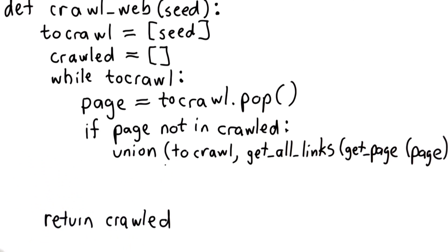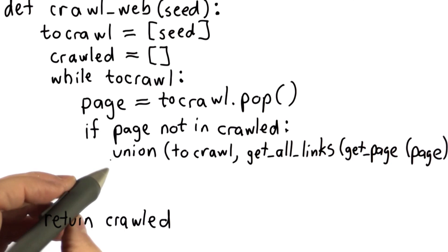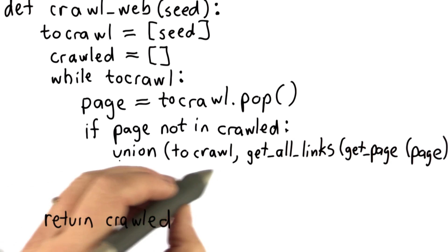The best way to do that is to use the union procedure that we defined in an earlier quiz this unit. That will avoid having duplication in tocrawl.